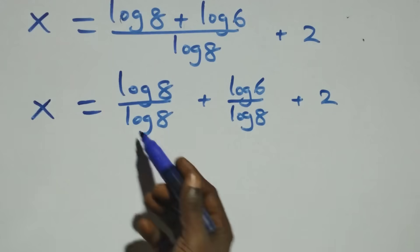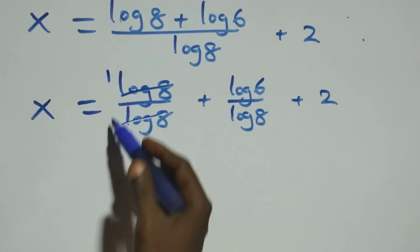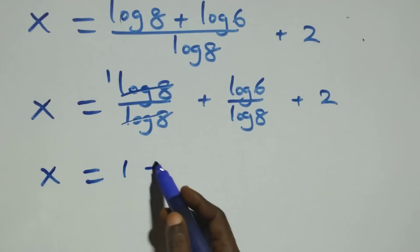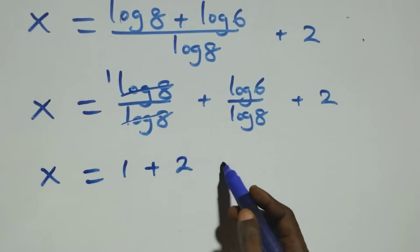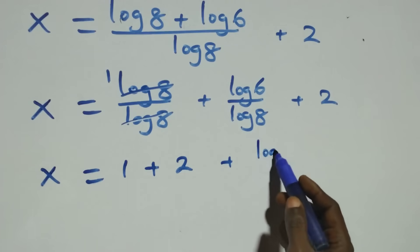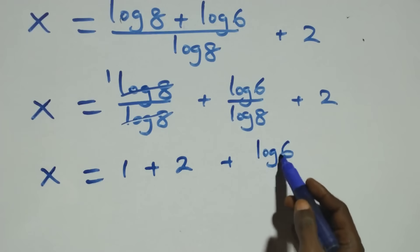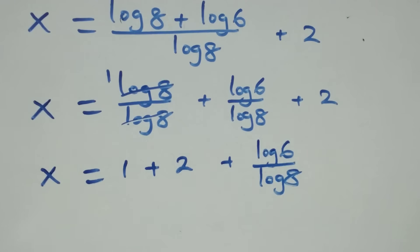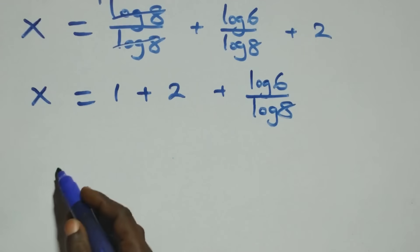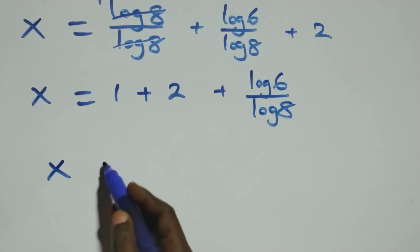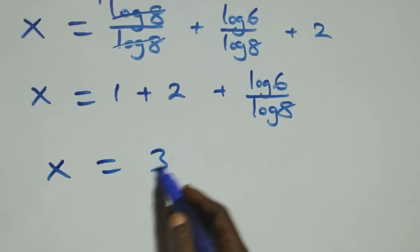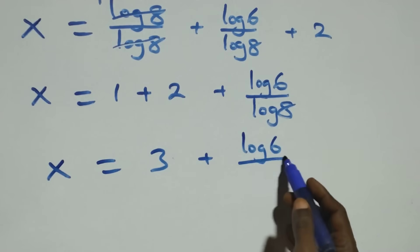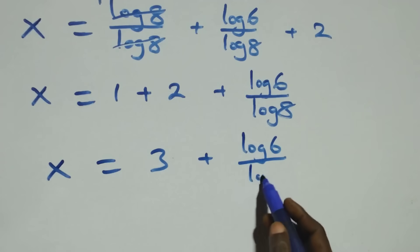And here, log 8 over log 8 cancels each other, leaving 1. So we have x equals 1 plus 2 then plus log 6 over log 8. Which implies x equals 1 plus 2, that's 3, then plus log 6 over log 8.